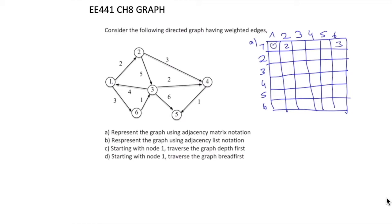All other values are 0 because there is no connection. For node 2, there is an edge from 2 to 3 having value 5, and also 2 to 4 having value 3. All others are 0. For node 3, there is a connection going out from 3 to 1 having value 4, a connection from 3 to 4 having value 2, and 3 to 5 having value 6.